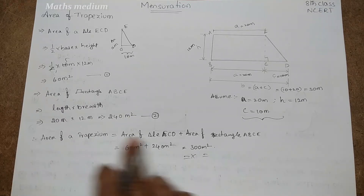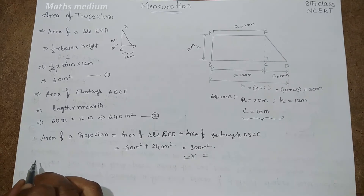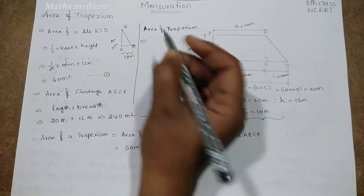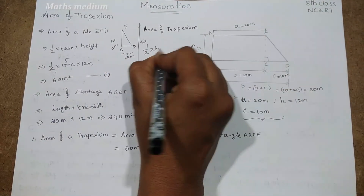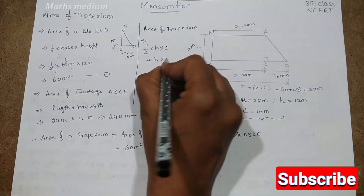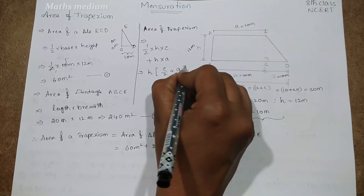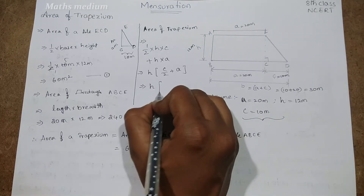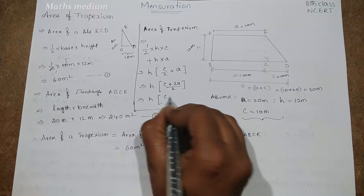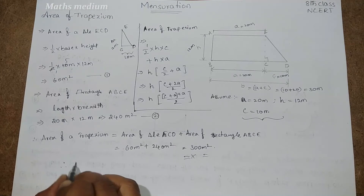That's one way of finding the area of a trapezium. Now using these values we can also derive the formula. Area of trapezium = half × h × c (triangle) + h × a (rectangle). Taking h as common: h × (c/2 + a) = h × (c + 2a)/2.